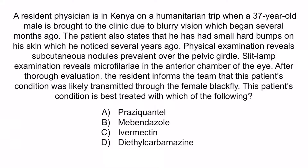If you return to the question, you can see that A and B are wrong because these are not first-line treatments for either Onchocerca volvulus or Loa loa. D is wrong because this is used to treat Loa loa, but not Onchocerca volvulus. So again, the correct answer is C, Ivermectin. And with that, we've covered everything you need to know regarding Onchocerca volvulus.